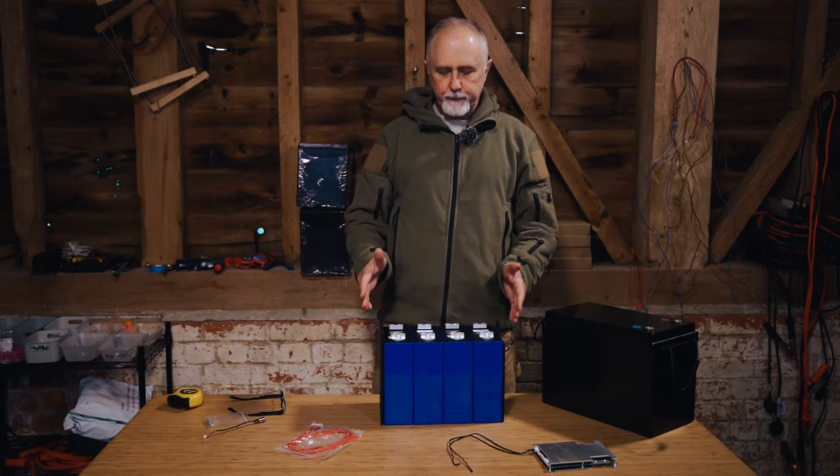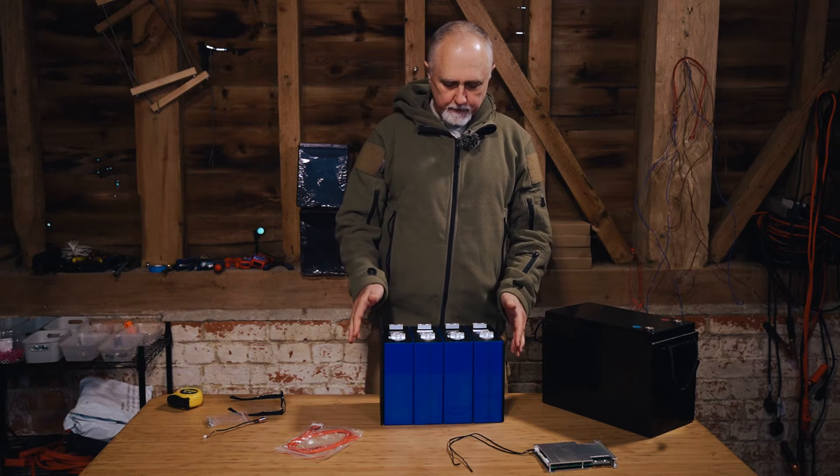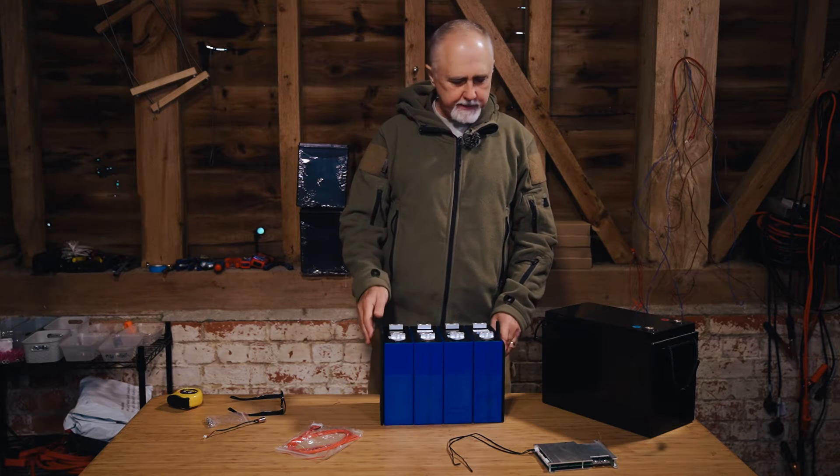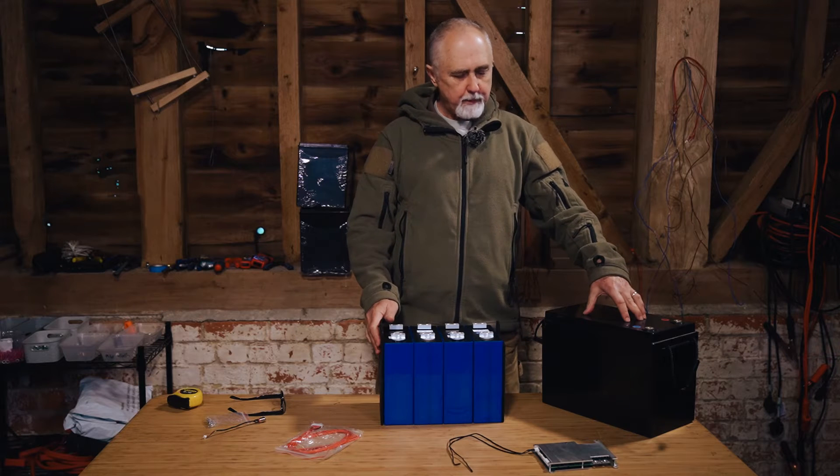How do you build a 200 or a 300 amp hour battery with a JK BMS into a standard replacement size?